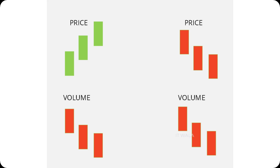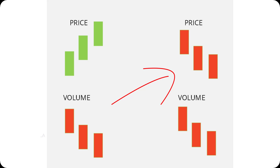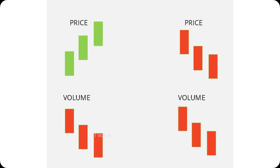Now look at this image. Here, the price is going up but the volume is going down, which means the upward movement of the price is weak. Whereas here, the price is going down but the volume is also going down, which means the downward movement of the price is also weak. This is called a volume trap, where the price surges but the volume is decreasing. Let's see an indicator in TradingView that can identify such volume traps for us.